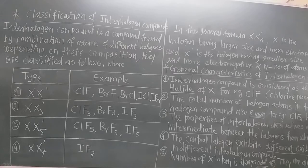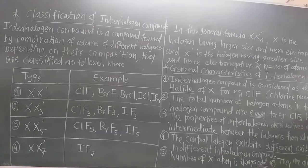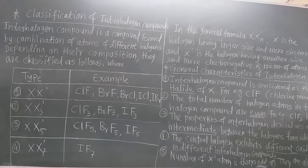Yesterday we already learned about the definition of interhalogen compounds. The interhalogen compound is a compound formed by combination of atoms of different halogens. The halogen that is more electronegative is always the negatively charged ion, and the halogen which has a somewhat more electropositive or less electronegative value is the positive ion.